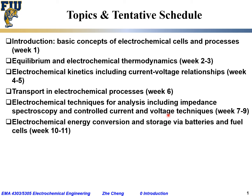Weeks ten to eleven will briefly cover examples of electrochemical energy conversion and storage — batteries and fuel cells. Batteries convert chemical energy to electrical energy; they can be primary (non-rechargeable) or secondary (rechargeable). Fuel cells also convert chemical energy to electrical energy using fuels like hydrogen or natural gas, but unlike batteries, they can generate electricity continuously as long as fuel is supplied.